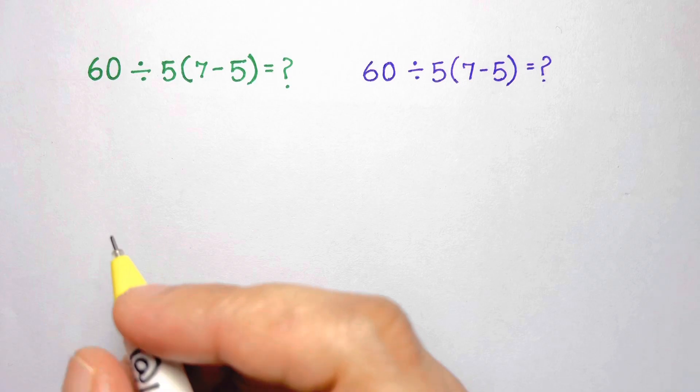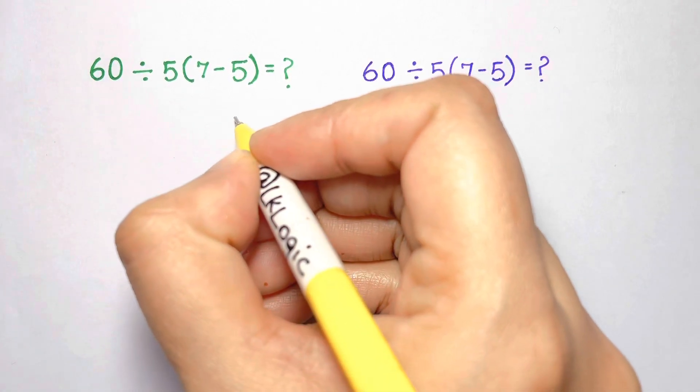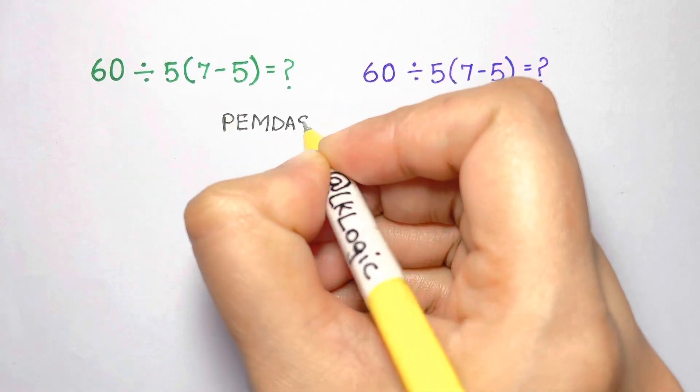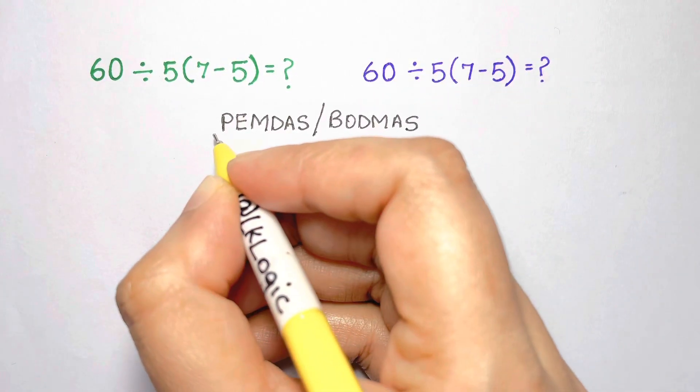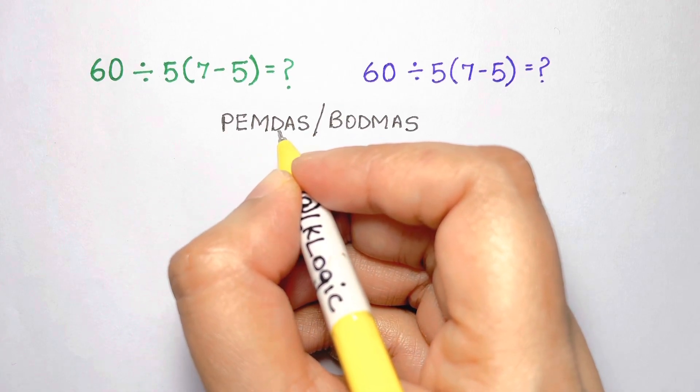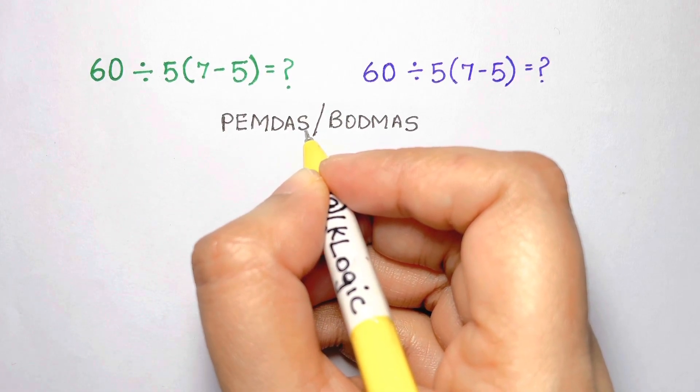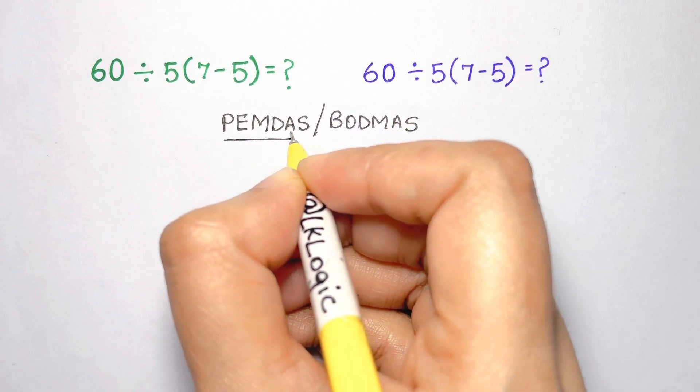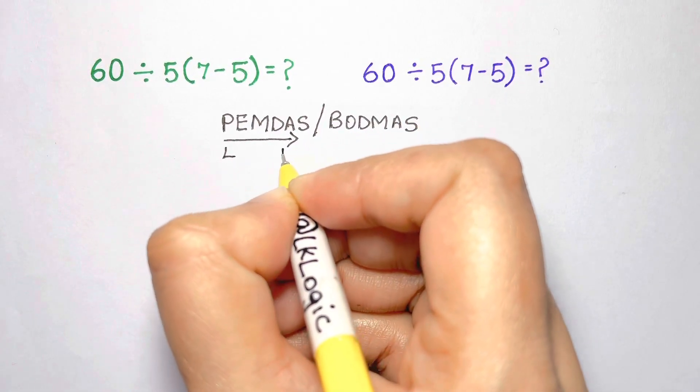We'll solve this using the order of operations, commonly referred to as PEMDAS or BODMAS. This refers to evaluating parentheses or brackets, then exponents or orders, then multiplication or division, and finally addition or subtraction. If there are two operations of the same precedence, you have to evaluate them from left to right.